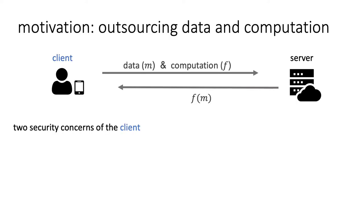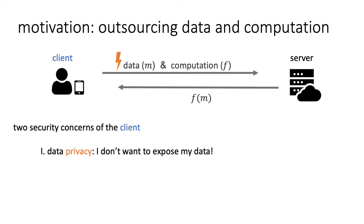Let me start with the motivation of our work. The motivation is an outsourced computation where a client outsources its data and computation to a server, then the server gives back the result. In this case, we can think about two security concerns of the client: the first one is data privacy, that the client doesn't want to expose its data; the second one is computation integrity, that the client wants to be guaranteed that the result is correct.